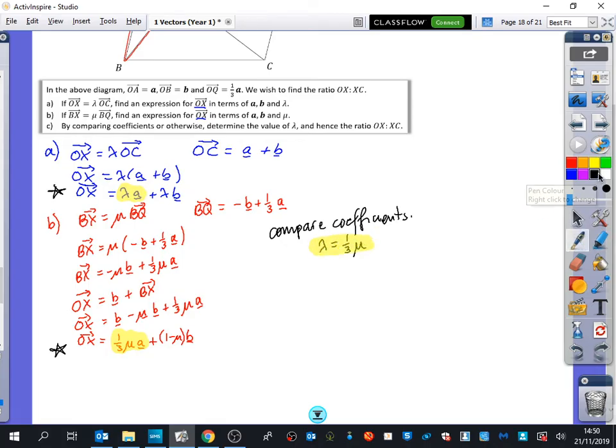We're now going to compare the B parts together. And the B parts together show me lambda is equal to one minus mu. So we're going to get a different kind of setup here. Lambda is equal to one minus mu. That came from comparing the B coefficients. We have some simultaneous equations.